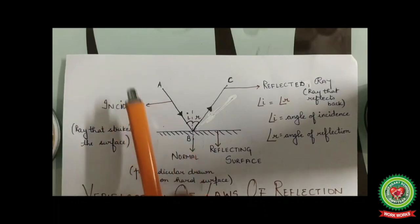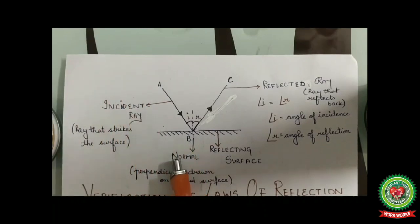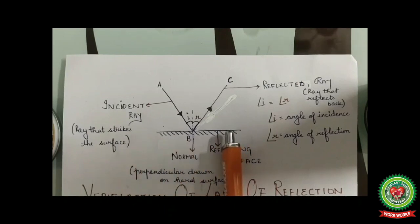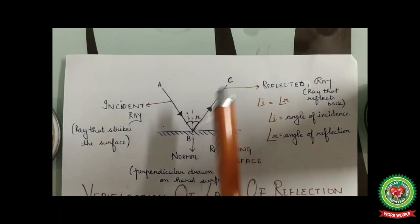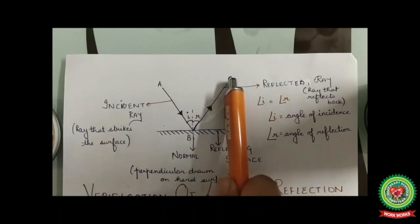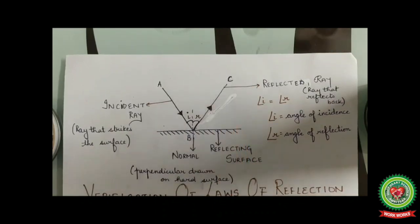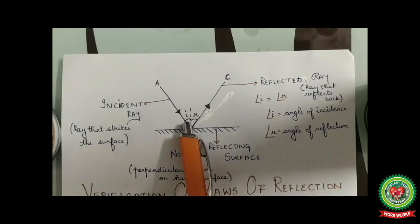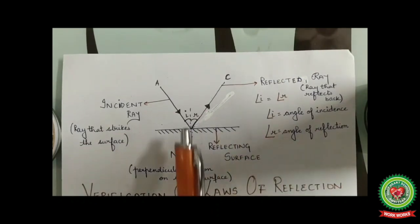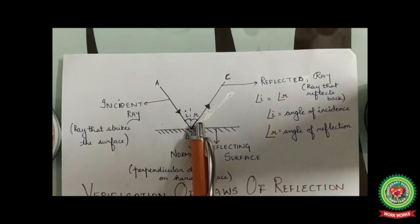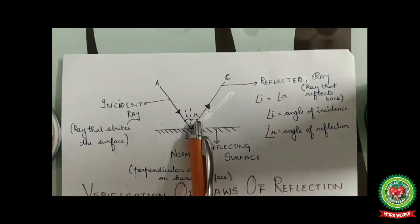See this diagram: let AB be an incident ray, or incident sound wave, which strikes the hard surface and then reflects back as sound wave BC, where BC acts as the reflected ray. Angle i represents the angle of incidence and angle r represents the angle of reflection, where angle i is equal to angle r according to the law of reflection.